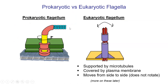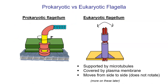One important note: the bacterial flagellum is actually very different from a eukaryotic flagellum, which we'll talk about in Topic 7, the first topic after the midterm. They have the same name, but the eukaryotic flagellum is a much larger, different structure with a different power source. It doesn't rotate — it flip-flops back and forth like a whip.